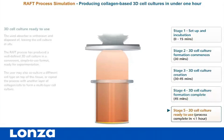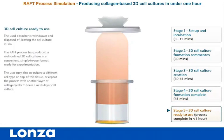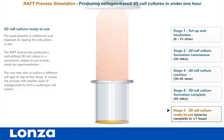Stage 5: 3D cell culture ready to use. The used absorber is withdrawn and disposed of, leaving the cell culture in situ. The Raft Process has produced a well-defined 3D cell culture in a convenient, simple-to-use format, ready for experimentation.